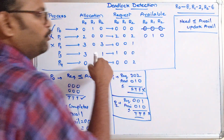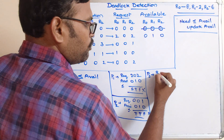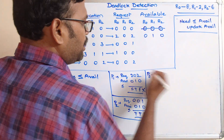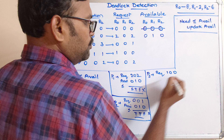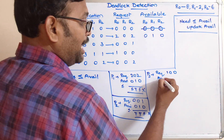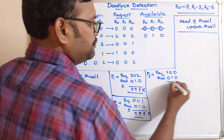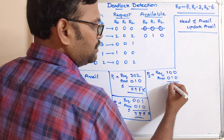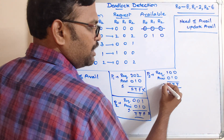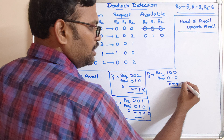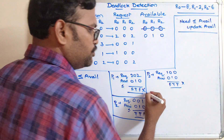Next, P3. P3 requires 1,0,0 and available is 0,1,0. Checking: 1 ≤ 0 is false. That one false condition means P3 cannot complete its execution either.